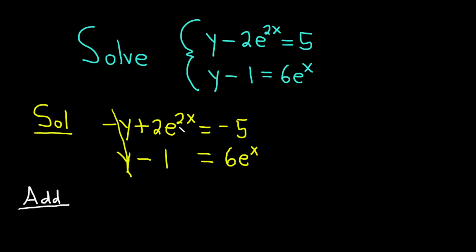Then we have 2e to the 2x minus 1. So 2e to the 2x minus 1. And then we have equals. And then over here, we have minus 5 plus 6e to the x.